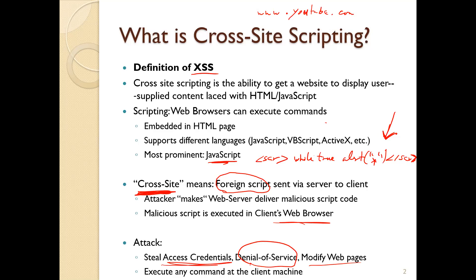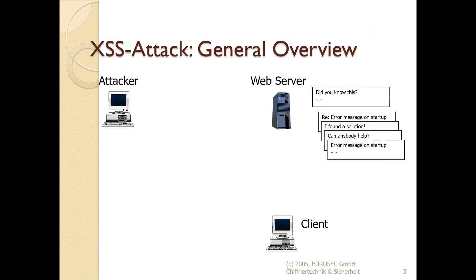Are there any questions so far? So here I have a nice diagram of the XSS attack. It involves three parties: the attacker, the web server, and the client. Let's say this is Facebook, their server out in California. You're the client here at school, and there's some attacker somewhere.